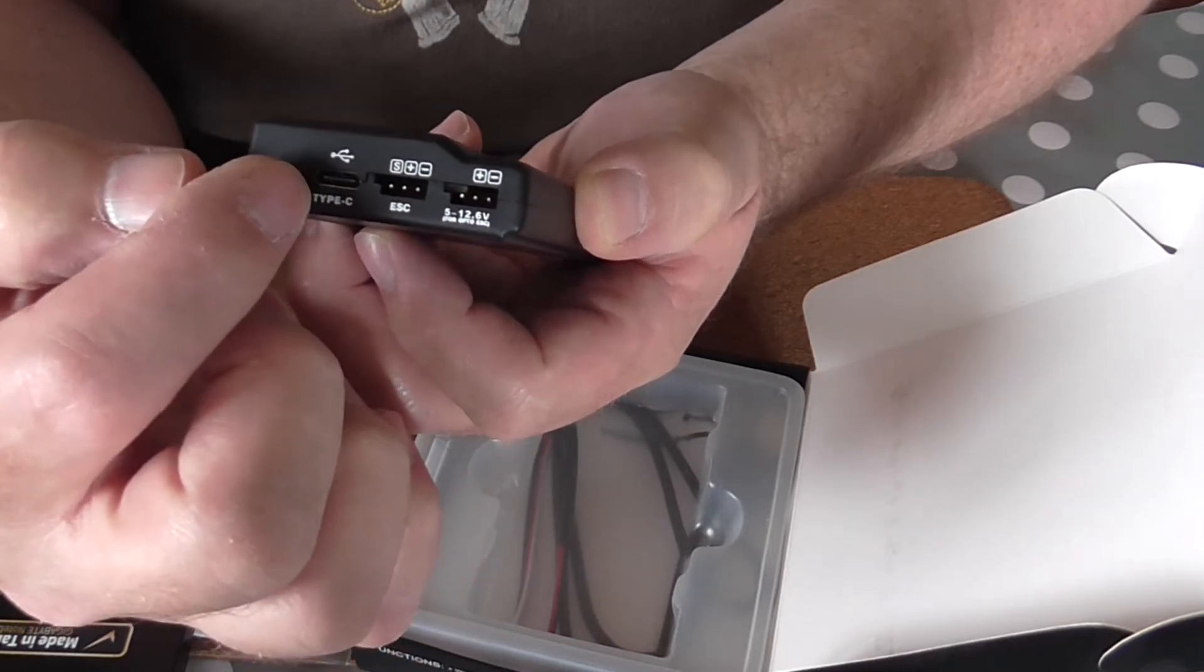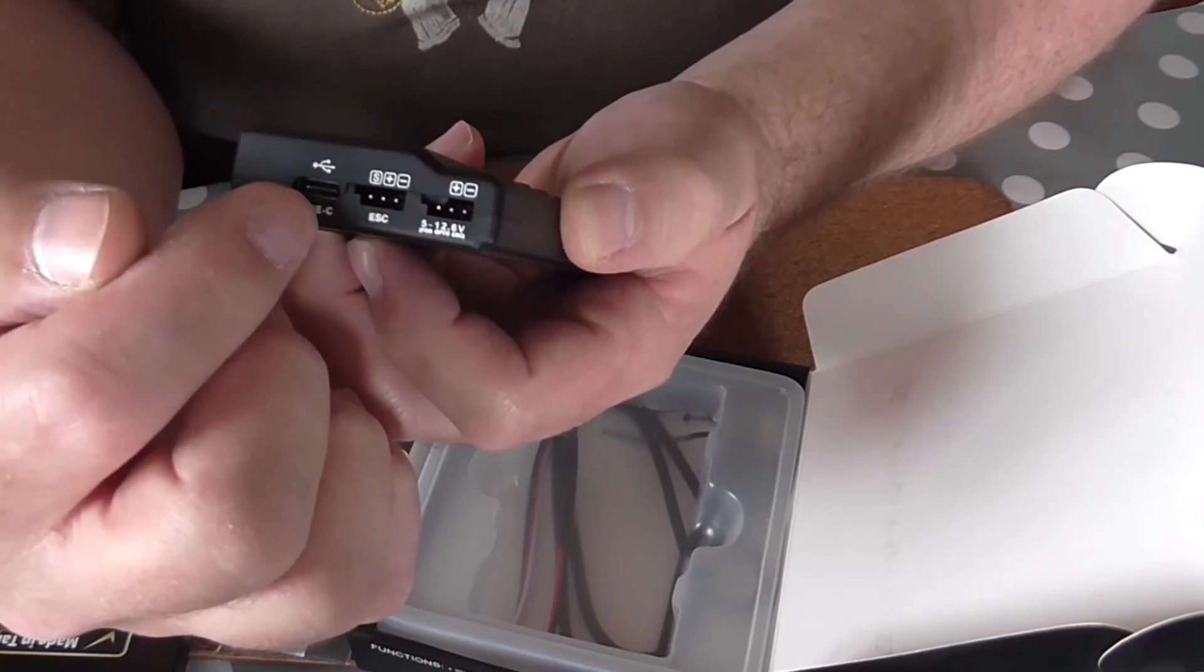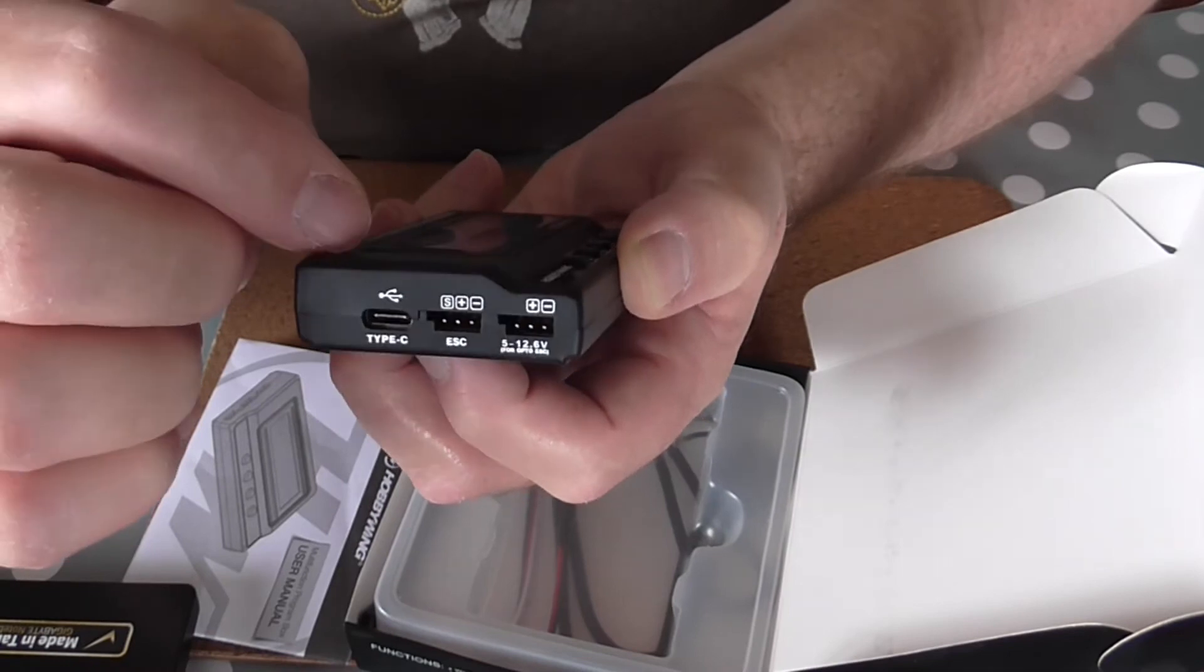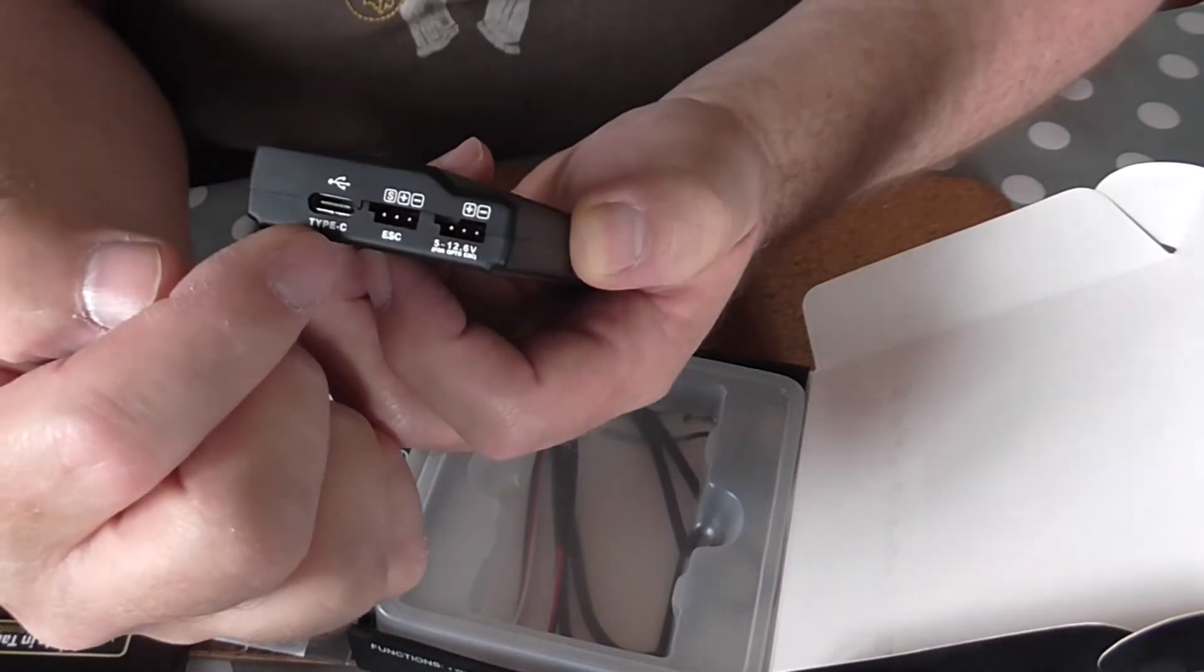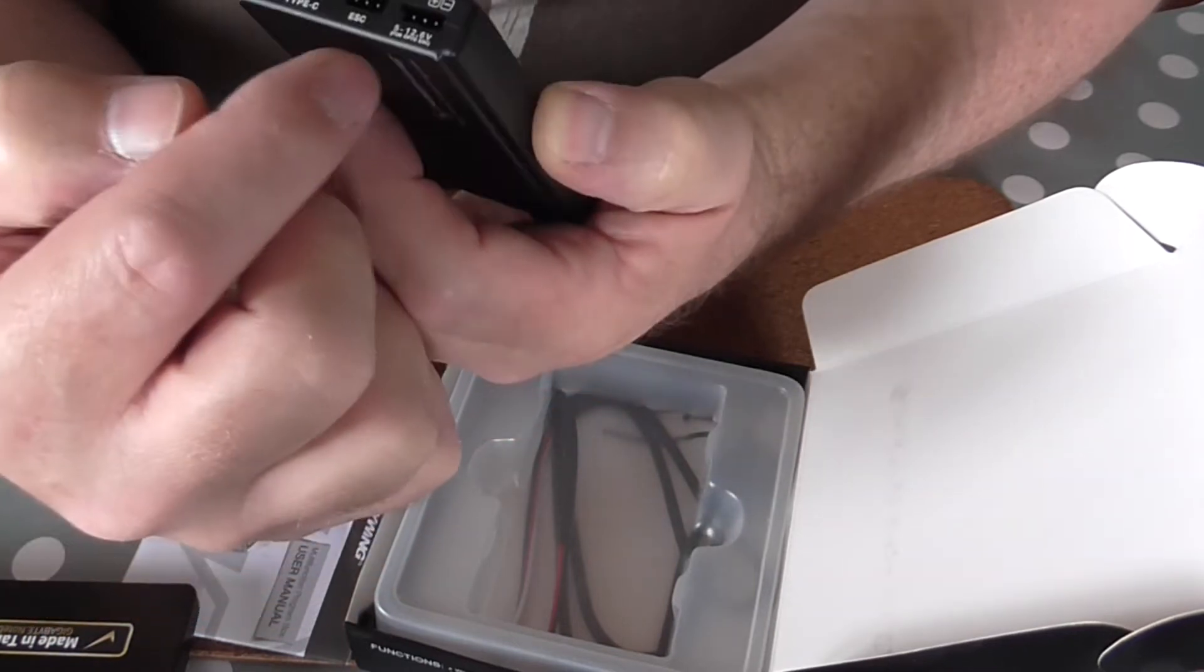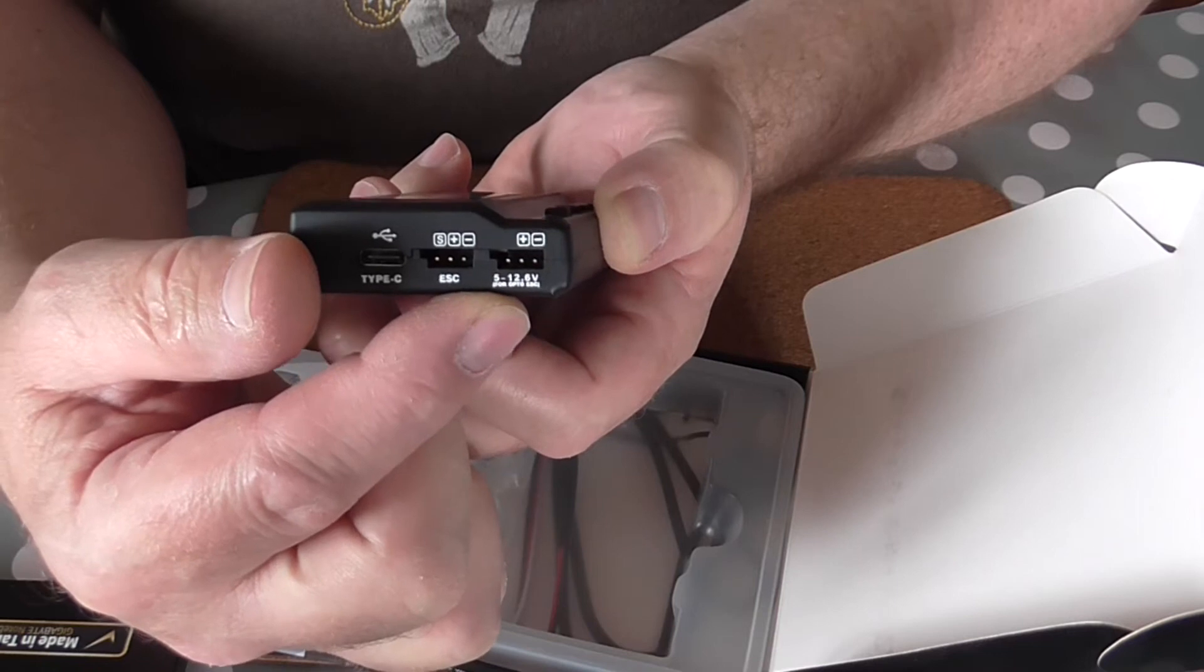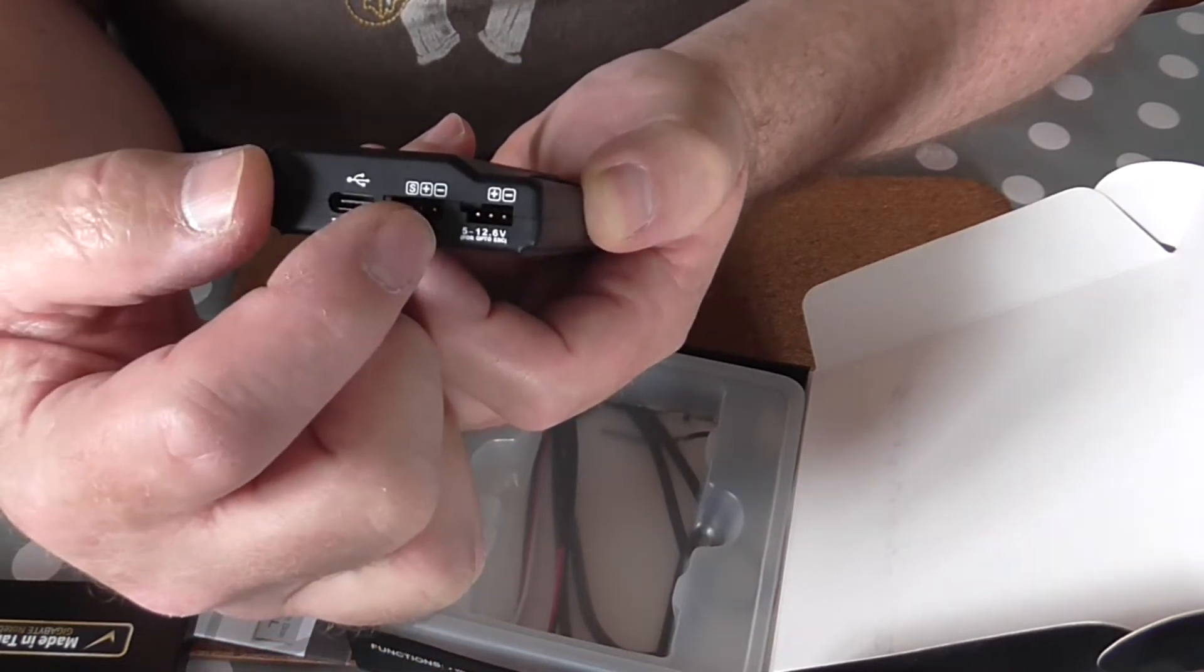So you can in effect power it and control it through that for programming and upgrade the firmware on your ESCs. So not only upgrade the firmware on this, but you can do pass-through and upgrade the firmware on your ESC. And at the end we have power input if you need to power it separately from the ESC itself.